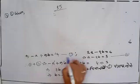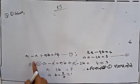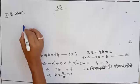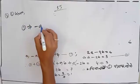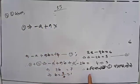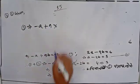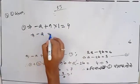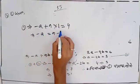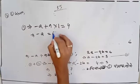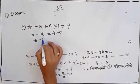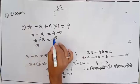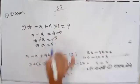From equation one: minus a plus 9b equal to 4. So implies: minus a plus 9 into 1 equal to 4, so minus a equal to 4 minus 9, therefore minus a equal to minus 5, so a equal to 5.